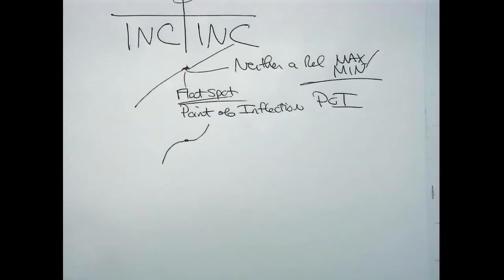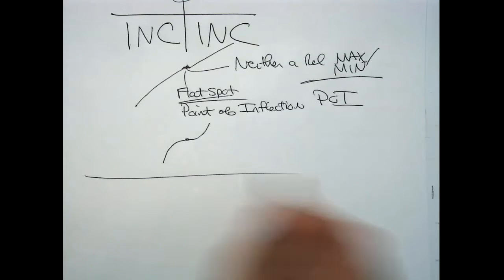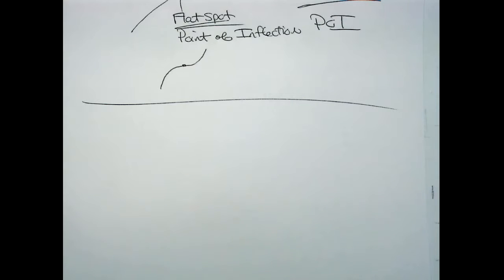Let's do an example and apply the first derivative test. Note that vertical asymptotes, when you build tables of increasing and decreasing, are technically not considered critical numbers because there's no y-value there. Critical numbers are supposed to have a point involved. But for increasing and decreasing tables, you definitely want to include them as slicers. Let's build a table of increasing and decreasing for this function.